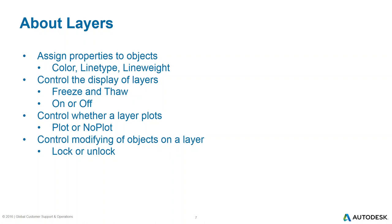We also have a plot or no-plot option for layers, much like the Def Points layer, except we have full control — we can make any layer a plotting or non-plotting layer. We can also lock or unlock a layer. When you lock a layer, you can still draw on it, but no modify commands will work on those objects. So if you try to move or erase an object on a locked layer, it won't work until you unlock that layer. These are all columns you'll see in the Layer Properties palette.